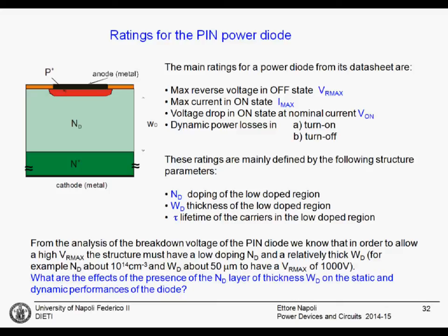From this table, we see that we have three design parameters and five important ratings: voltage, current, Von, turn-on losses, and turn-off losses. It is clear that there will be a trade-off somewhere. We don't have enough design parameters to optimize each of them.